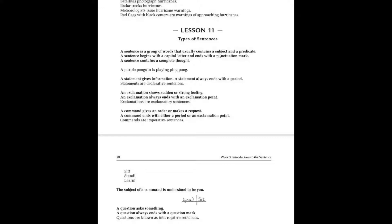Today we're going to talk about types of sentences. A sentence is a group of words that usually contains a subject and a predicate. A sentence begins with a capital letter, ends with punctuation, and contains a complete thought. For example, 'A purple penguin is playing ping-pong' is a complete sentence.